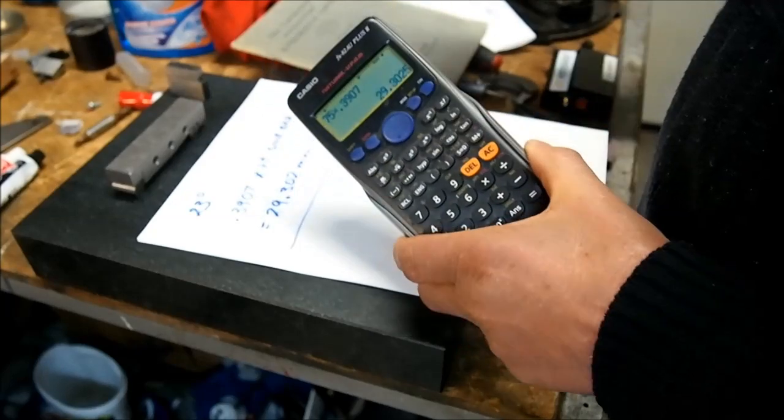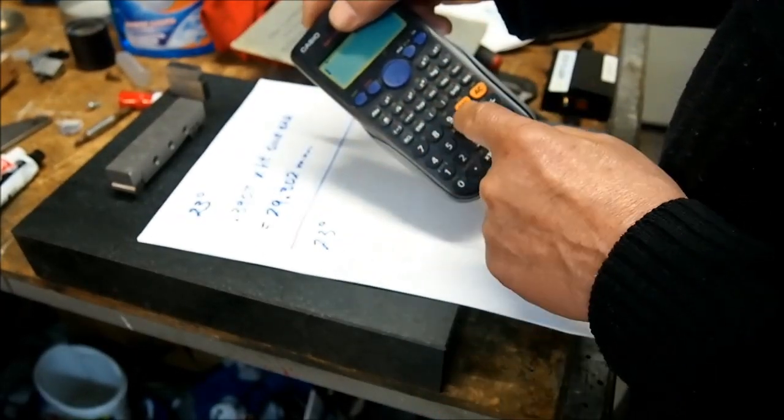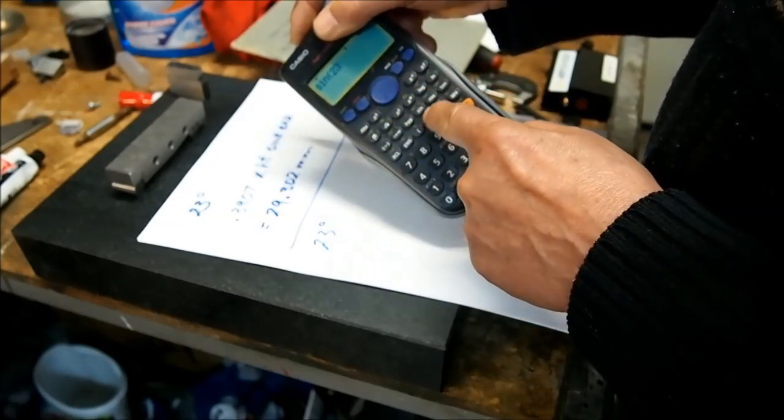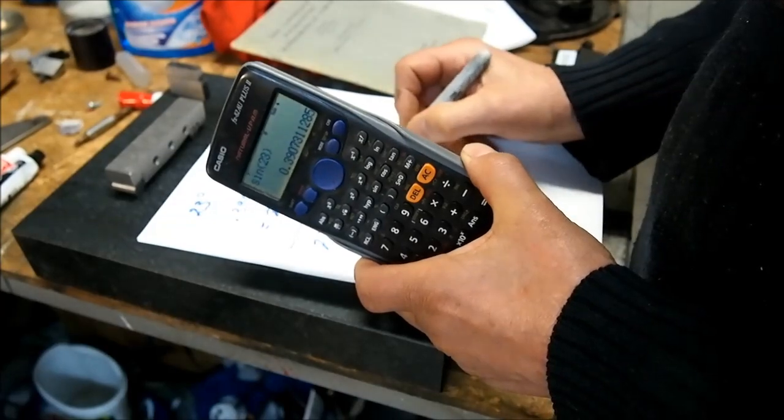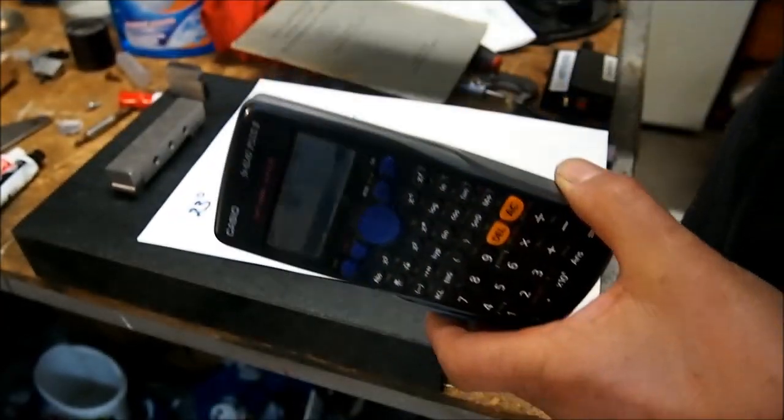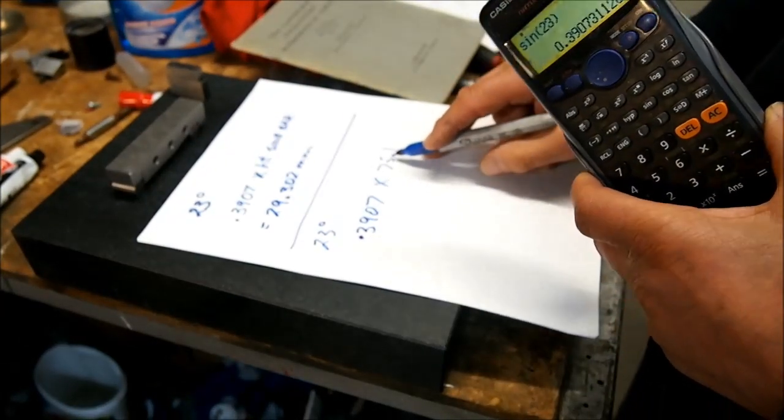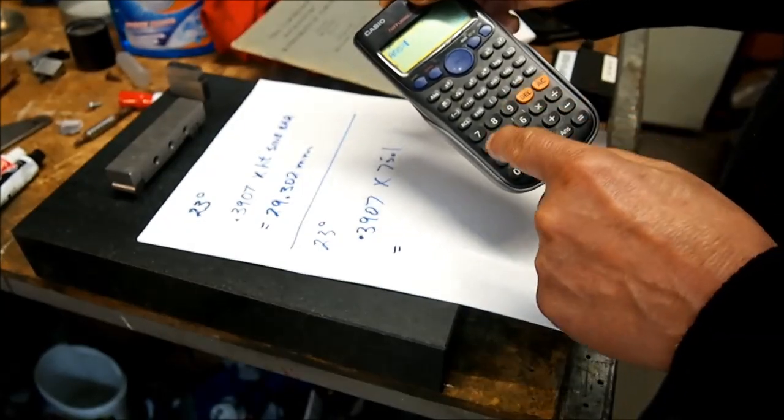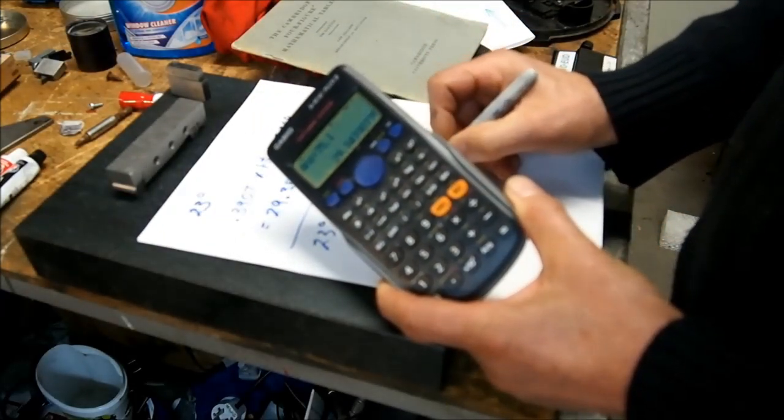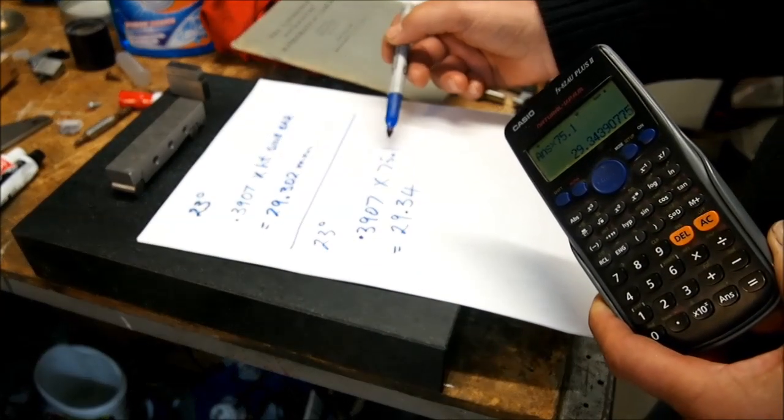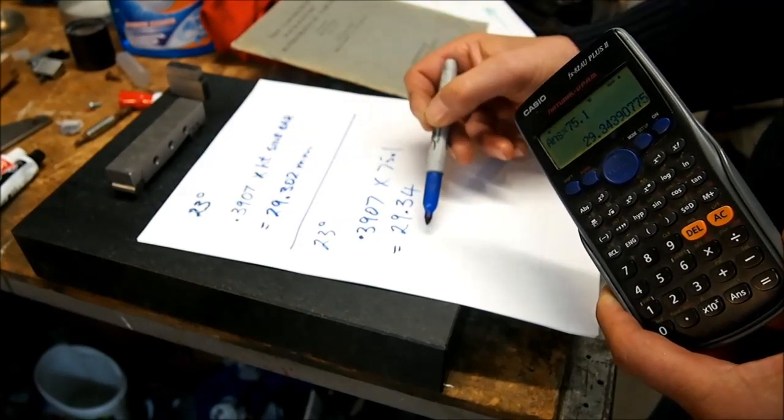Now we can do all of this with a calculator rather than the tables. So we go back to our 23 degrees again. We get our calculator and we go sine 23. Equals 0.3907. Now let's assume that my sine bar was not 75 millimetres but it was 75.1 because of bad machining. So we multiply that by 75.1 by the sine. And that comes to times 75.1, and that will give us a stack of 29.34. So you can see that a 0.1 of a millimetre error in my sine bar, which is quite a lot, results in 0.04 millimetres stack height.